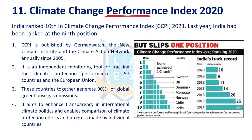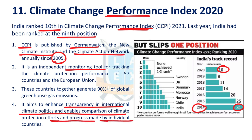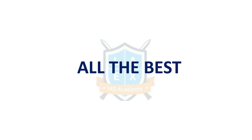The next issue is the Climate Change Performance Index. India is ranked 10th in the Climate Change Performance Index for 2021 — last year India was ranked 9th. In 2014, India had a rank of 31st. This index is published by German Watch, New Climate Institute, and Climate Action Network annually since 2005. It is an independent monitoring tool that assesses policies taken by various governments to reduce climate change, enhances transparency in international climate policies, and allows comparison of climate protection efforts among countries. These are the issues of December month — thank you very much and all the best.